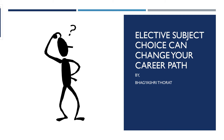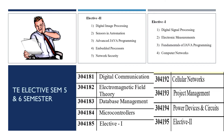We will start with TE — semester five and six. The compulsory subjects for fifth semester are: Digital Communication, Electromagnetic Field Theory, Database Management, Microcontroller, and Elective One. For sixth semester, the compulsory subjects are: Cellular Network, Project Management, Power Devices and Circuits, and Elective Two.